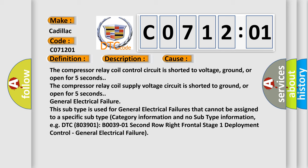The compressor relay coil supply voltage circuit is shorter to ground or open for 5 seconds.